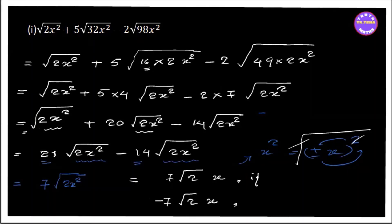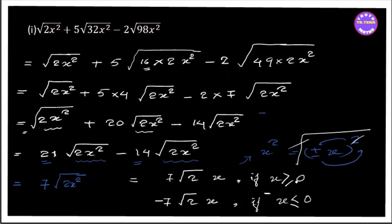So if x is greater than or equal to 0, then if x is greater than 0 it is negative, so we have minus 1, minus 2, minus 3, and so on.